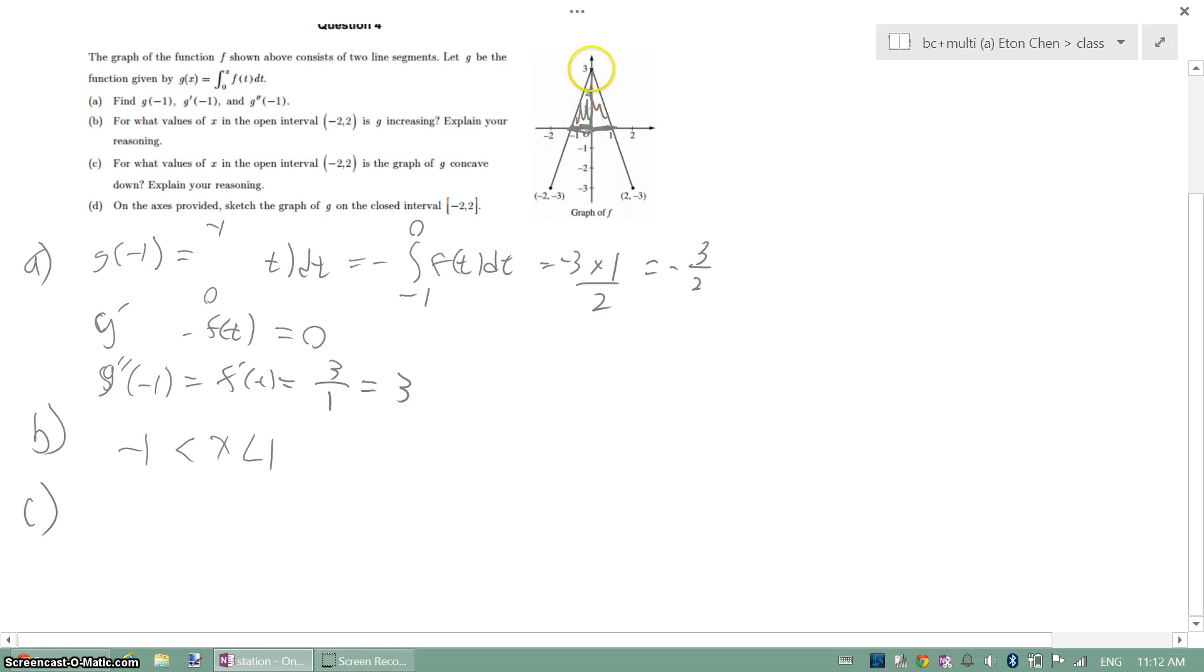So the slope of this part is going up, which is positive. And the line over here is going down, which is negative. So we can tell it's from 0 to 2.